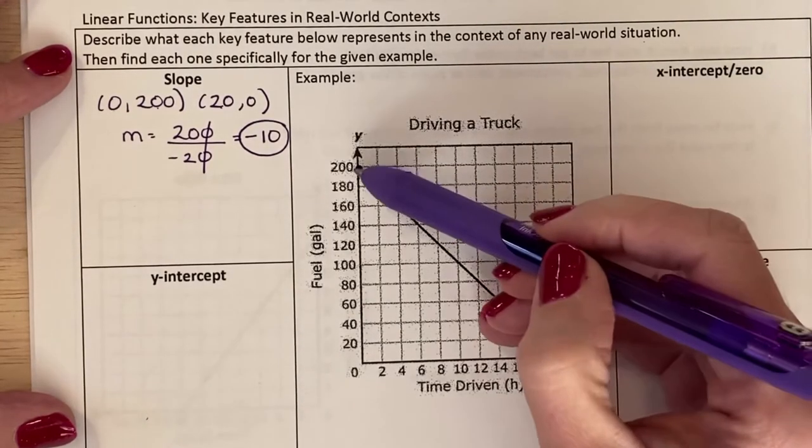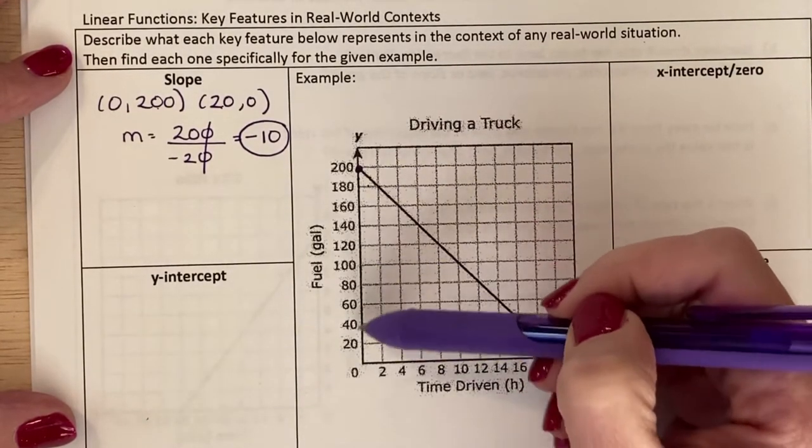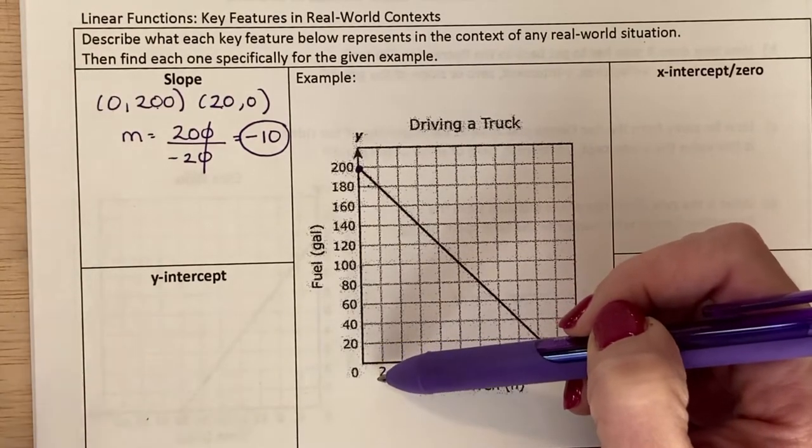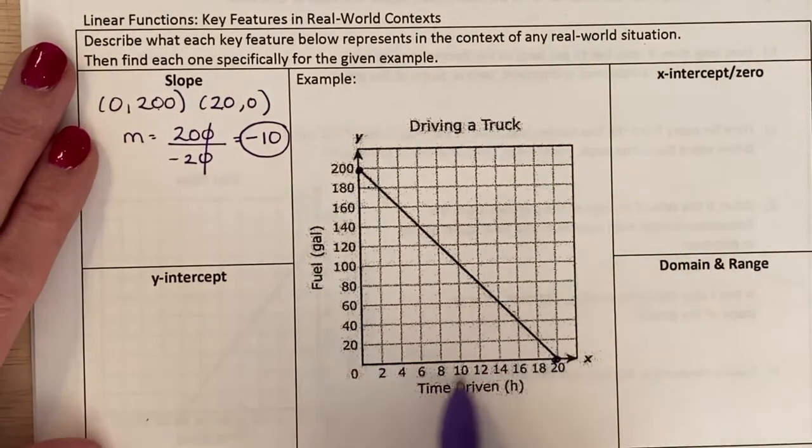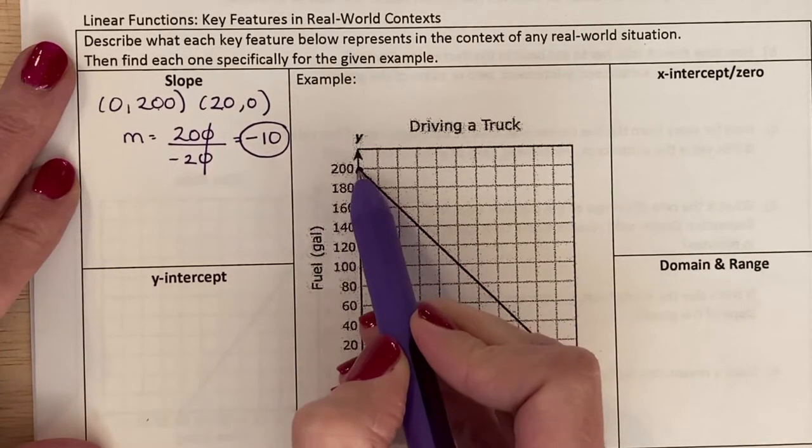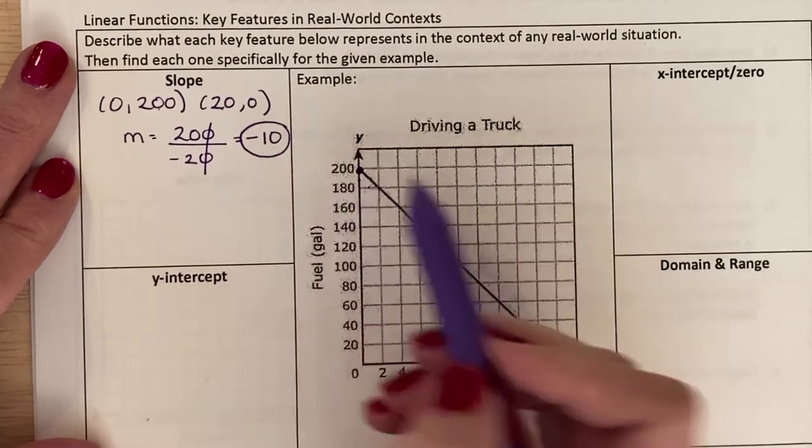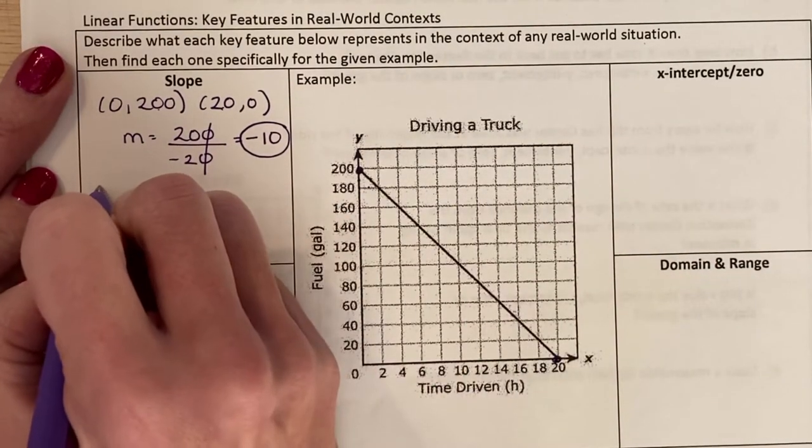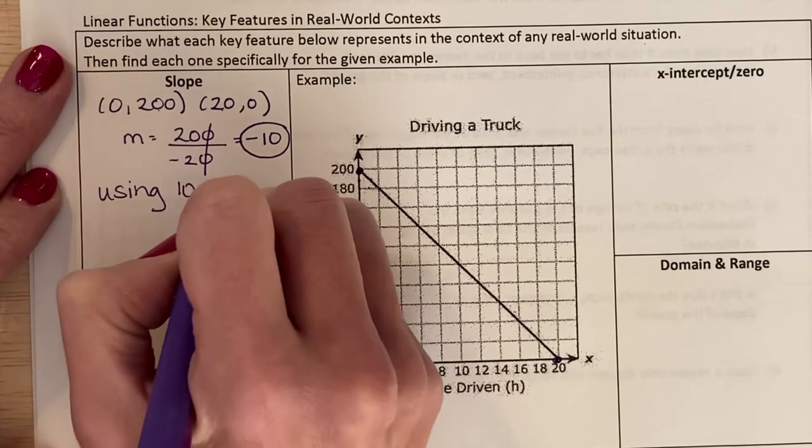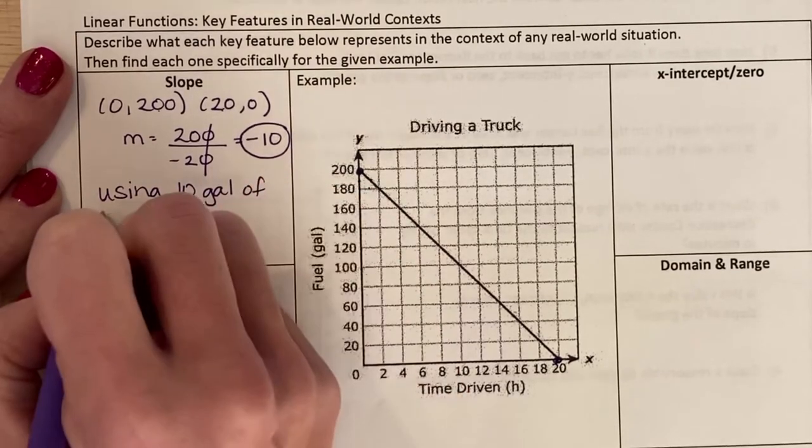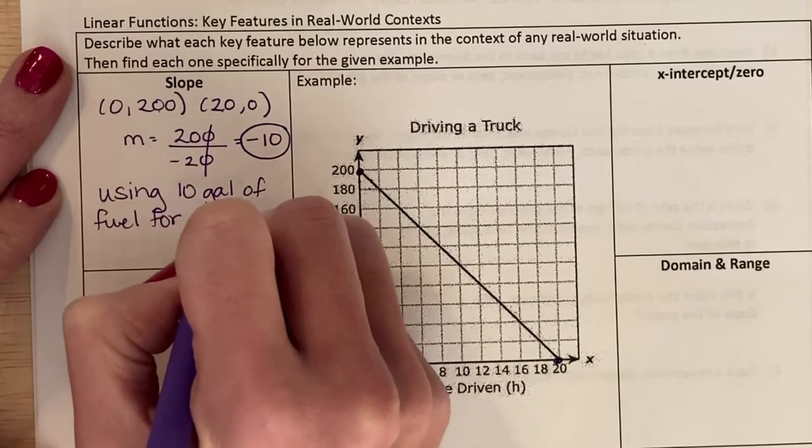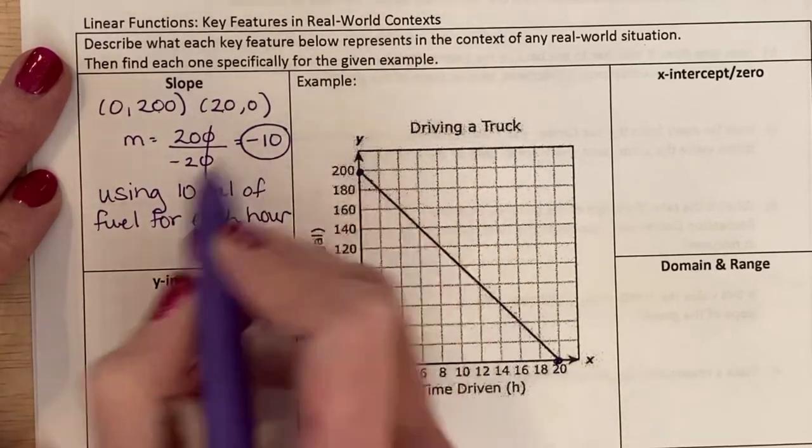My change in y is how much fuel I'm using, and my change in x is how much time I'm driving. Basically, that means I'm losing or using 10 gallons of fuel for every hour that I drive. So I'm using 10 gallons of fuel for each hour that I drive.